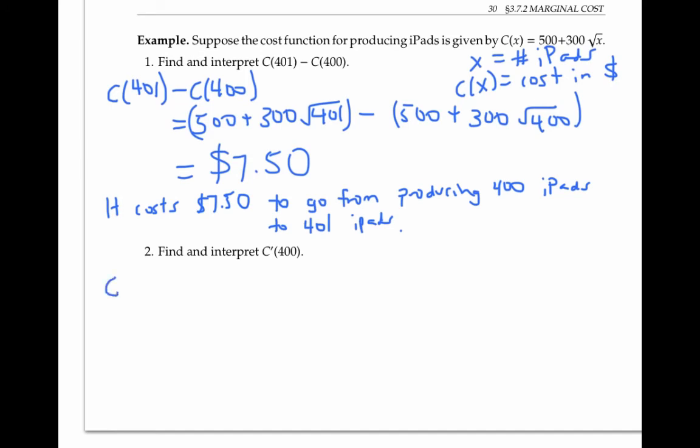If I want to compute C'(400) instead, I can see that C'(x) is equal to 300 times (1/2)x^(-1/2).